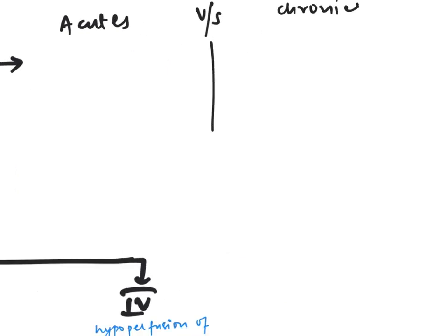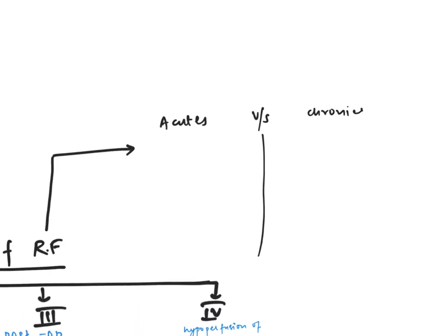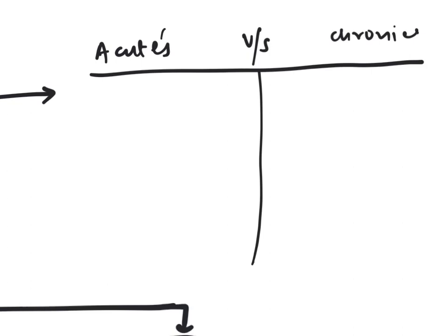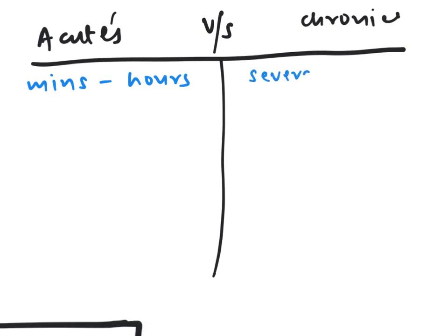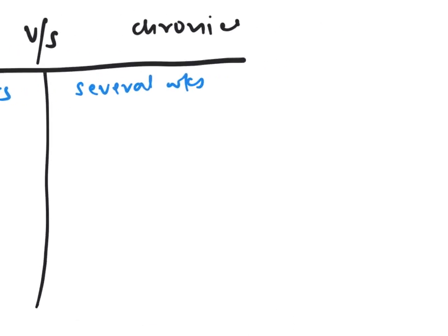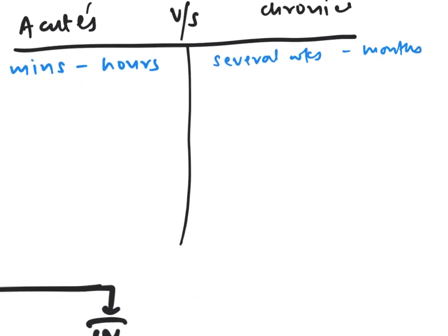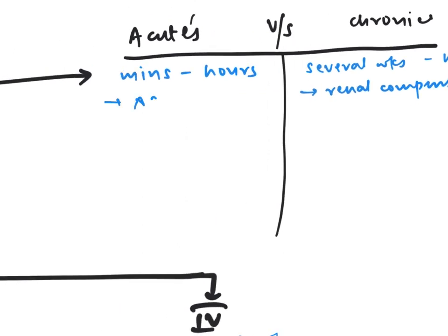Here you have to remember three things — this is a very important concept. Acute respiratory failure occurs in minutes to hours. On the other hand, chronic respiratory failure takes several weeks to months. Since chronic takes time to develop, there will be renal compensation. But since acute occurs early, there is no time for compensation — so no compensation.